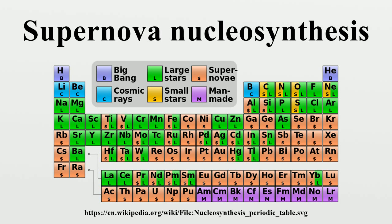The entire silicon-burning sequence lasts about one day in the core of a contracting massive star and stops after nickel-56 has become the dominant abundance. The explosive burning caused when the supernova shock passes through the silicon-burning shell lasts only seconds but is the major contributor to nucleosynthesis in the mass range 28 to 60. The star can no longer release energy via nuclear fusion because a nucleus with 56 nucleons has the lowest mass per nucleon of all the elements in the sequence.